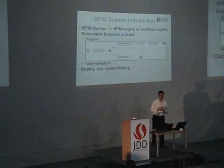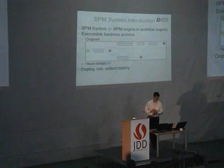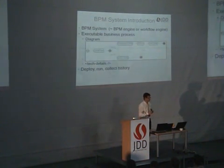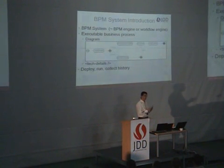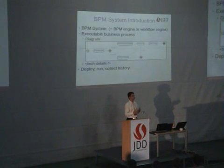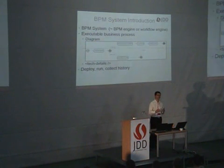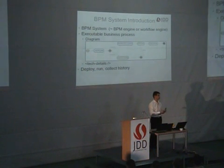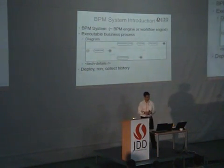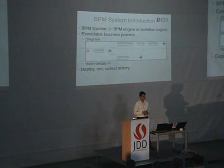A business process management system is a piece of software that helps you automate business processes. What you put as input into a BPMS like JBPM is the combination of a diagram and some technical details, so the BPMS can actually execute your process. Then you deploy this process onto the system and start executing instances of your process on your system.